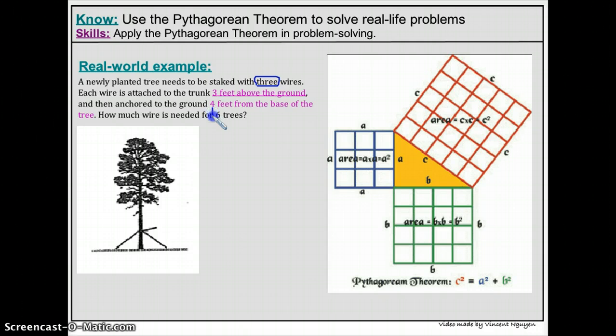So I am going to highlight the important information and also draw a little diagram. As you can see here, I'm going to use this information to draw my triangle. So here's where they start tying the wire, and it's three feet above the ground. So this right here is three feet.